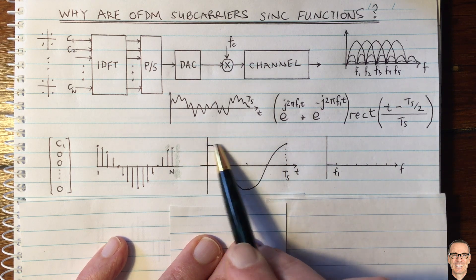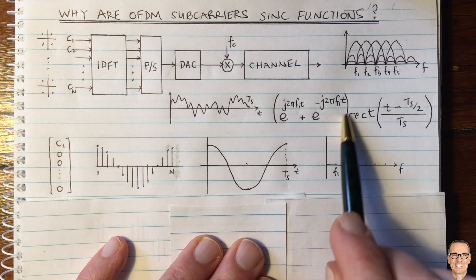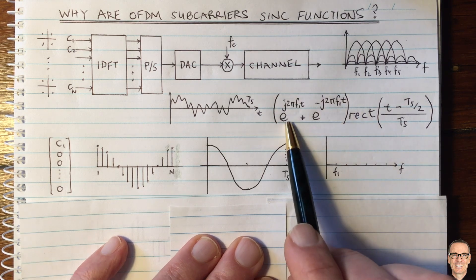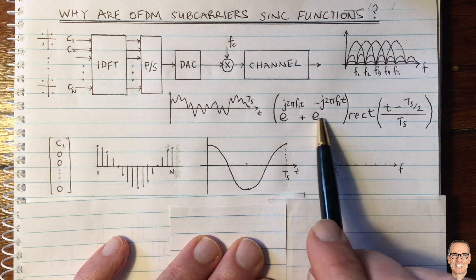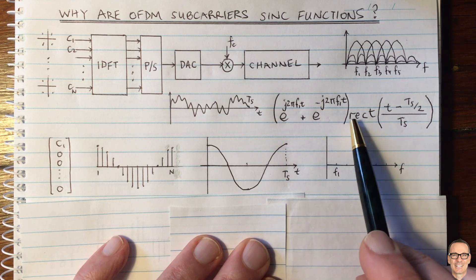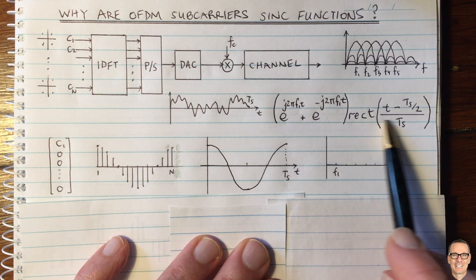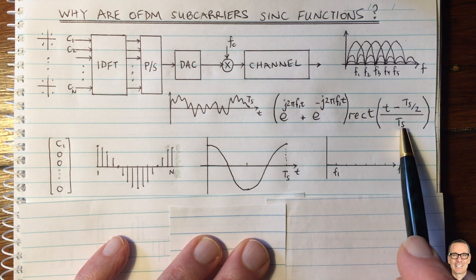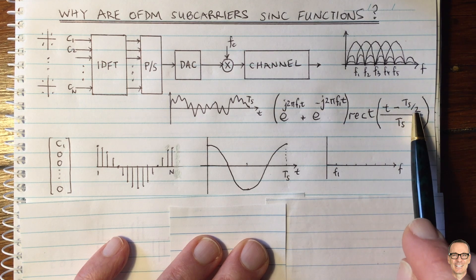So we can write this function as the multiplication of a cosine waveform, and I've shown the cosine waveform here in complex exponential form, and that multiplied by a rectangular function of width Ts centered at Ts over 2.